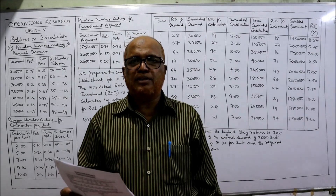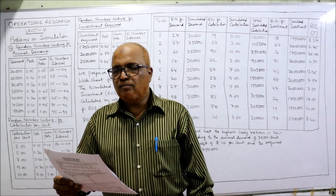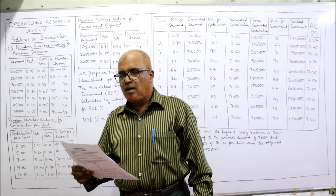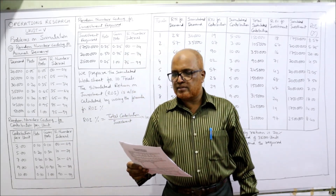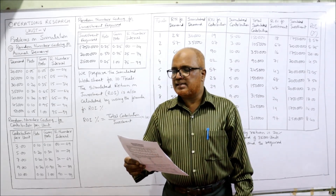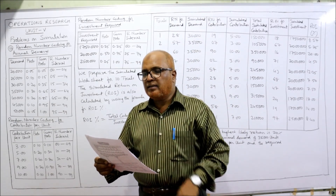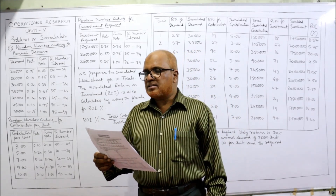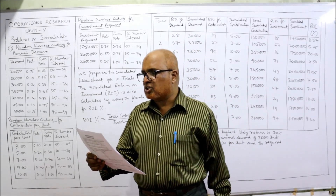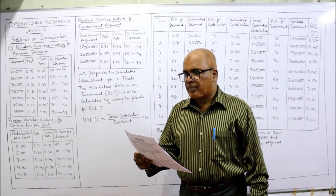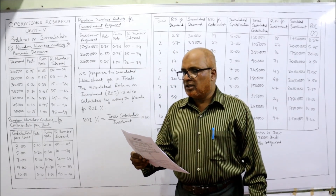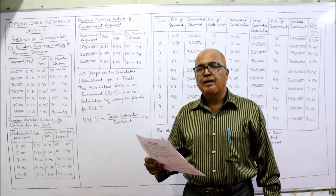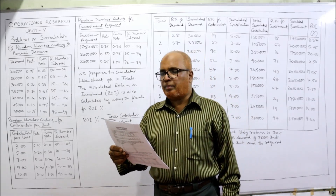Now see problem number 10. An investment corporation wants to study investment projects based on three factors: market demand in units, contribution (that is sales price minus variable cost) per unit, and the investment required. These three factors are felt to be independent of each other. In analyzing a new consumer product for a washing powder factory, the corporation estimates the following probability distribution.